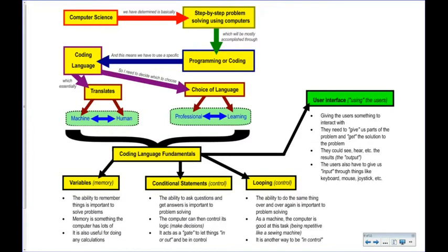Then there's the idea of the computer making decisions, or being able to be in control. We're going to study that as a whole unit called conditional statements — it's essentially the ability to ask questions, get results, and then act on those results, make decisions. In other words, create a fork in the road to decide to do one thing or another based on the way we write the code.